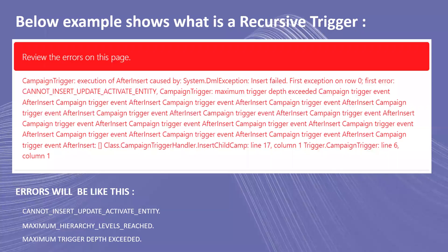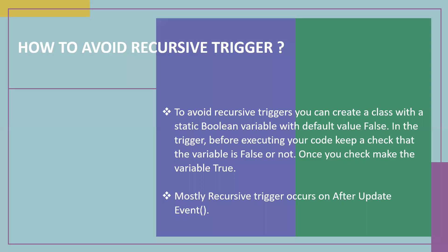The below example shows what a recursive trigger is. This type of large error will occur through a recursive trigger. The majority of errors will be like: cannot insert/update activity entity, maximum hierarchy levels reached, and maximum trigger depth exceeded. There may be more errors — these are the ones I found.